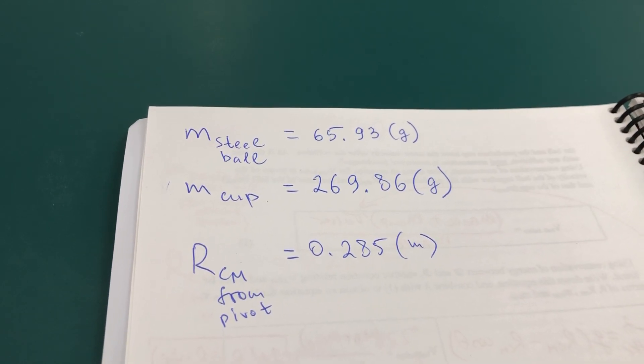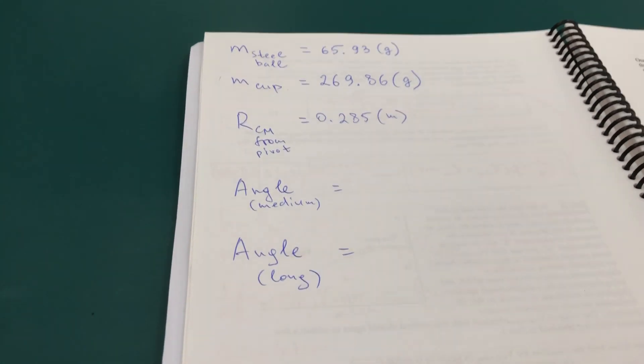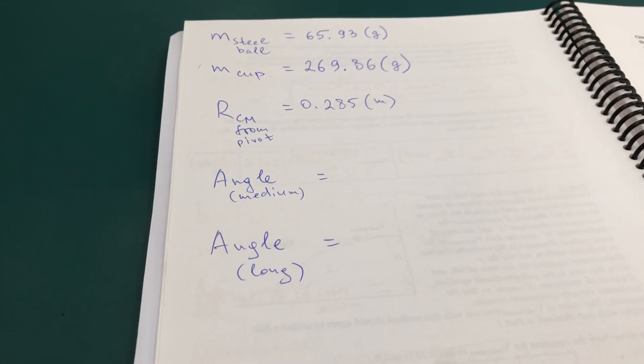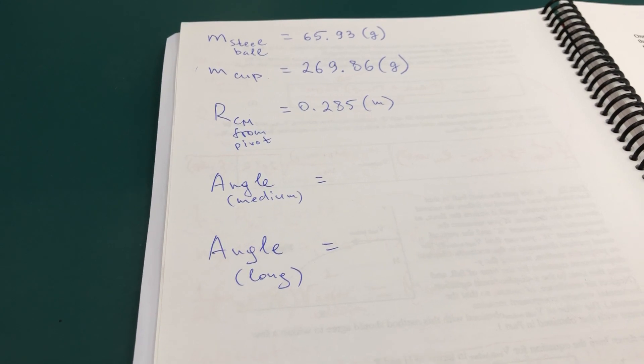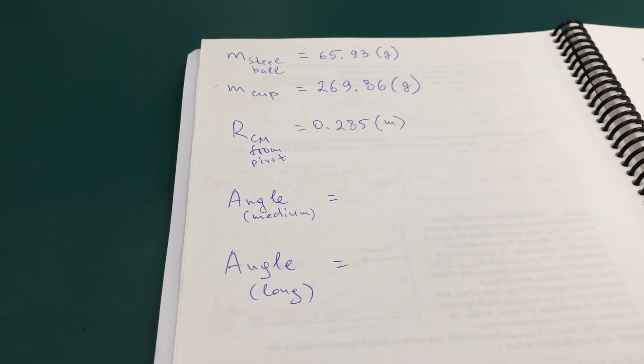So using those values plus the angle experiment should be enough to solve for the initial velocity of a ball from the conservation principles, which is coming next.